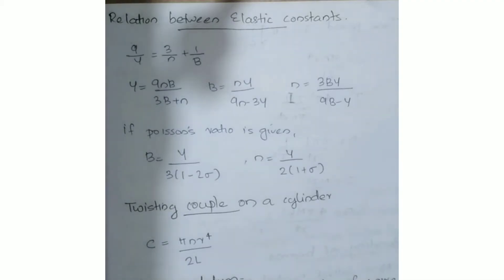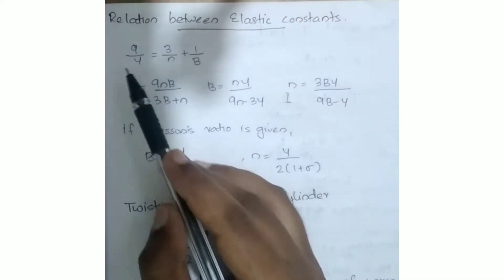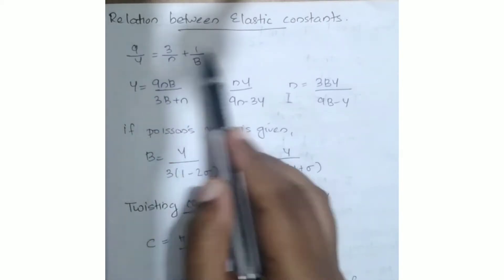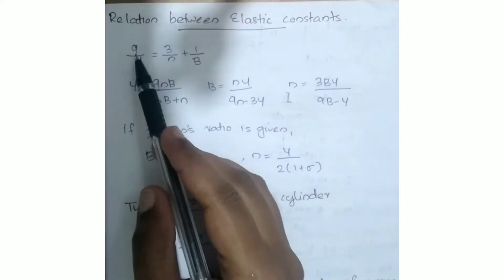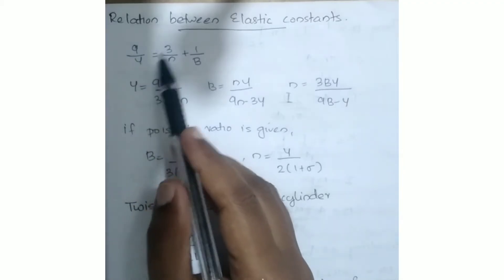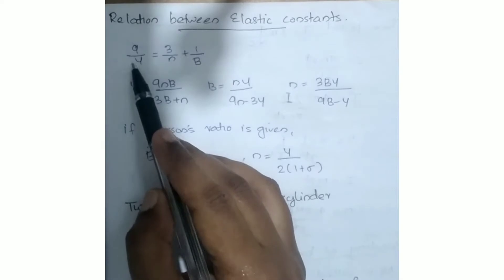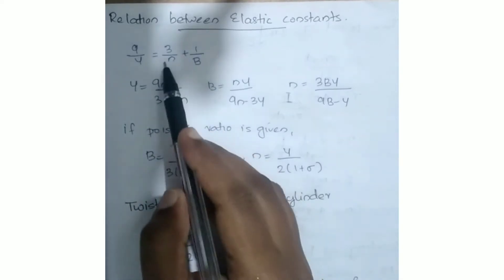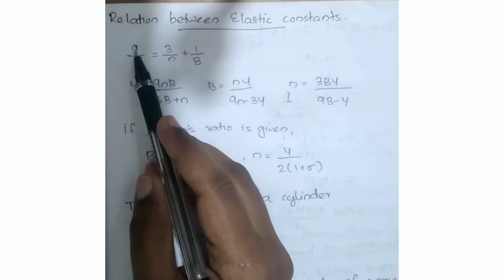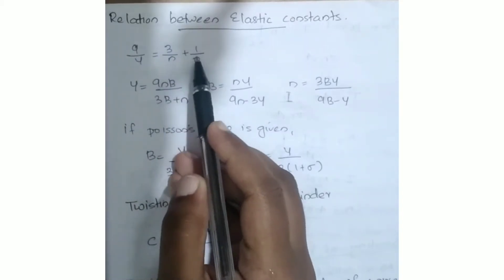Next, the relation between elastic constants. Elastic constants are Young's modulus, rigidity modulus, and bulk modulus. The relation is: 9 by Y is equal to 3 by n plus 1 by b. This is the relation between Young's modulus, bulk modulus, and rigidity modulus.